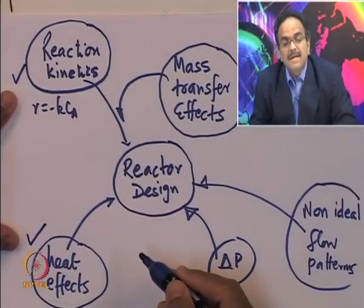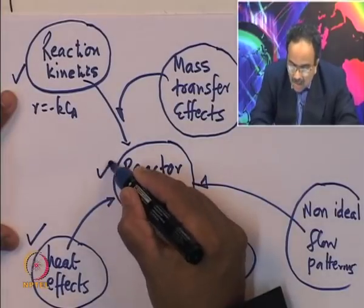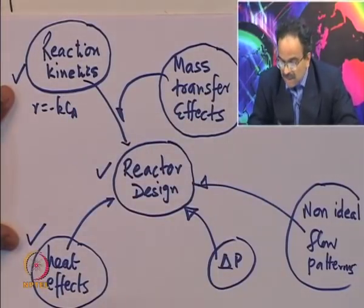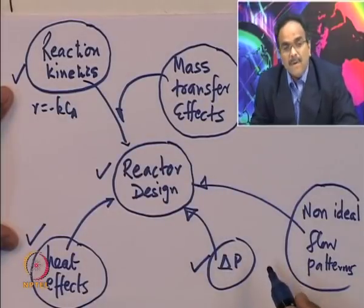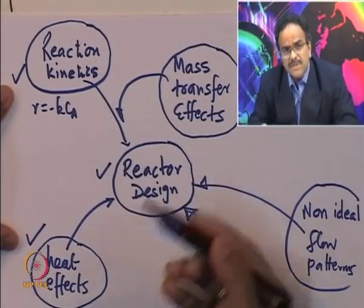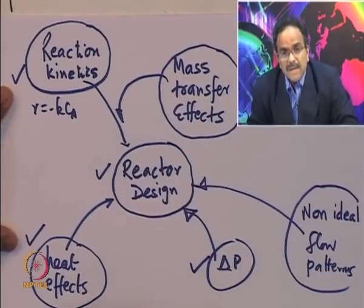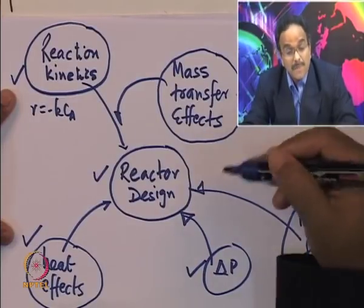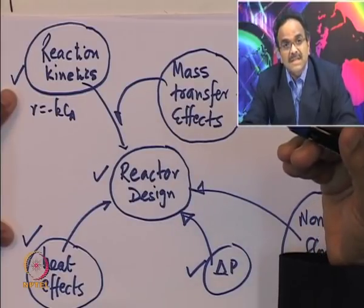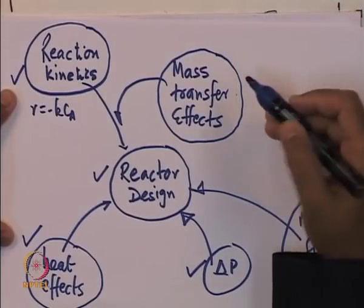You have also learned in part one how to design a reactor for these particular cases, including pressure drop constraints. These three things — reaction kinetics, heat effects, and pressure drop — you have already taken into account while designing the reactor. But now what you are going to look at is the effect of mass transfer if the reactants are sitting in two different phases, or if the product comes out of the reaction phase, or if the catalyst being used is in a solid phase — these multi-phase effects and flow pattern non-idealities.